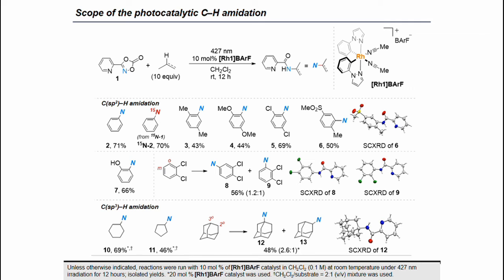Notably, we could also introduce a 15N-labeled amide fragment to benzene when using isotopically labeled dioxazolone. For di-substituted arenes, the amination was conducted at the more electron-rich carbon. When employing naphthalene as the substrate, the CH amination product was selectively formed. From the sp3 CH amination side, when subjecting adamantane as the substrate, tertiary C–H bond amination was preferred over secondary C–H amination.